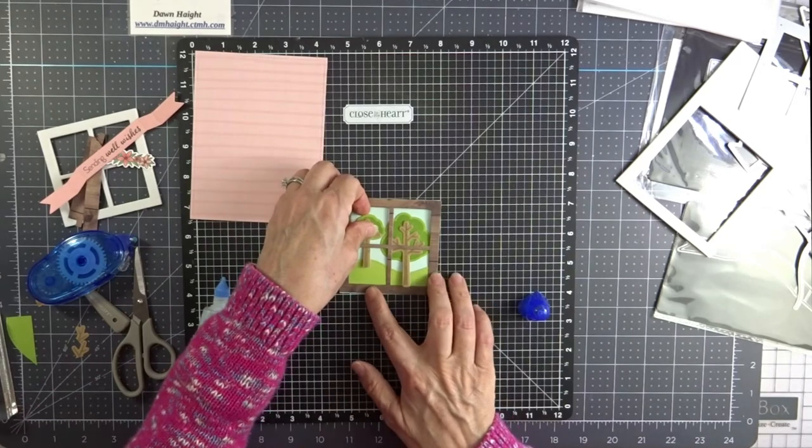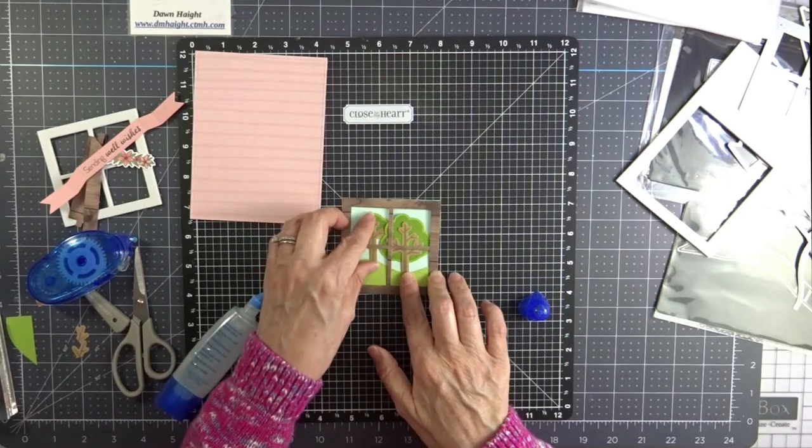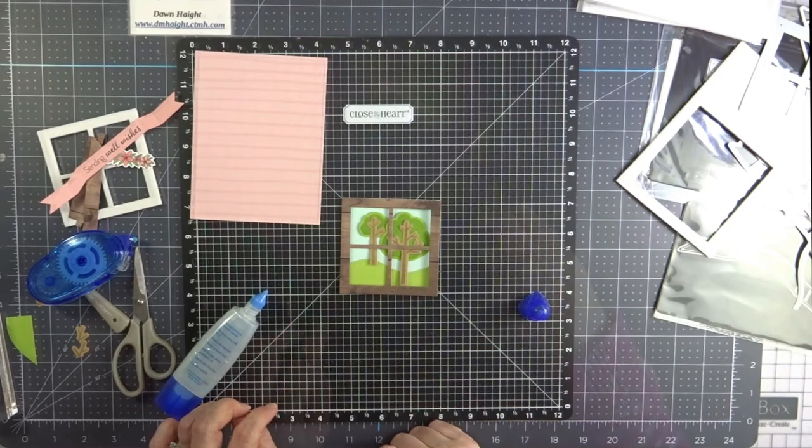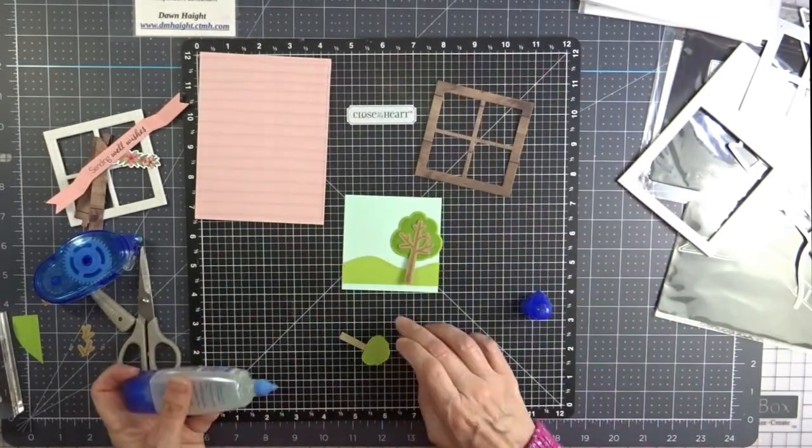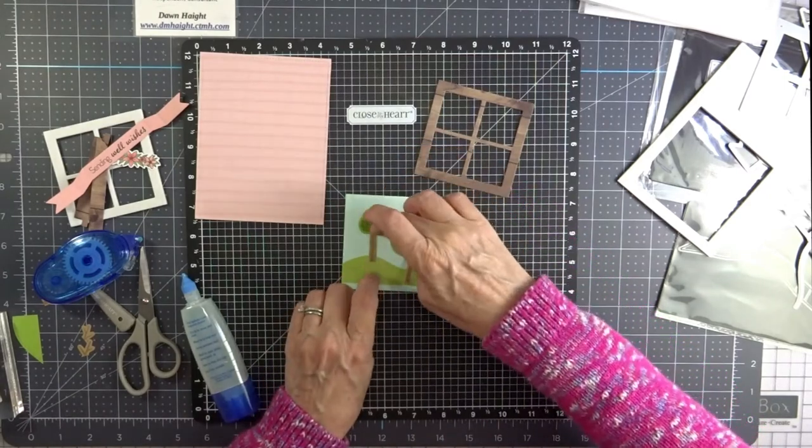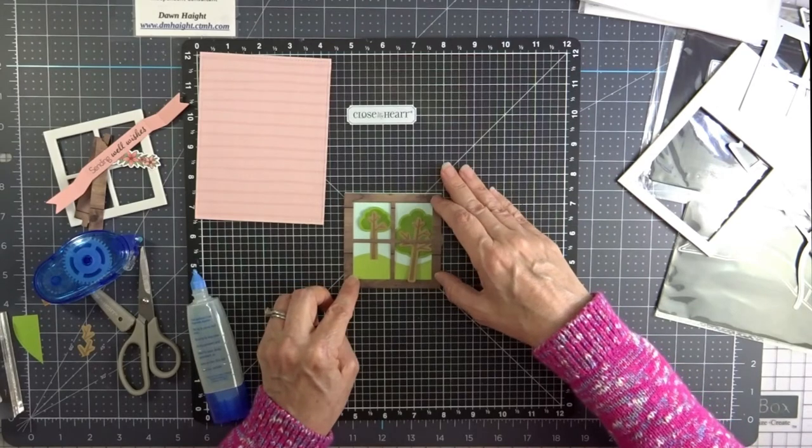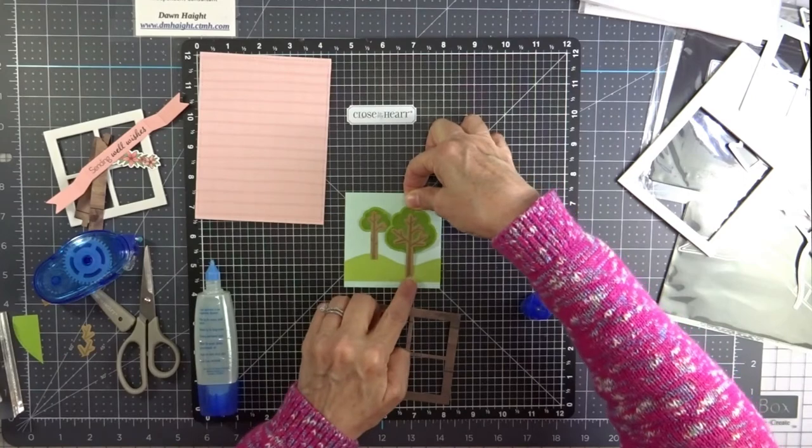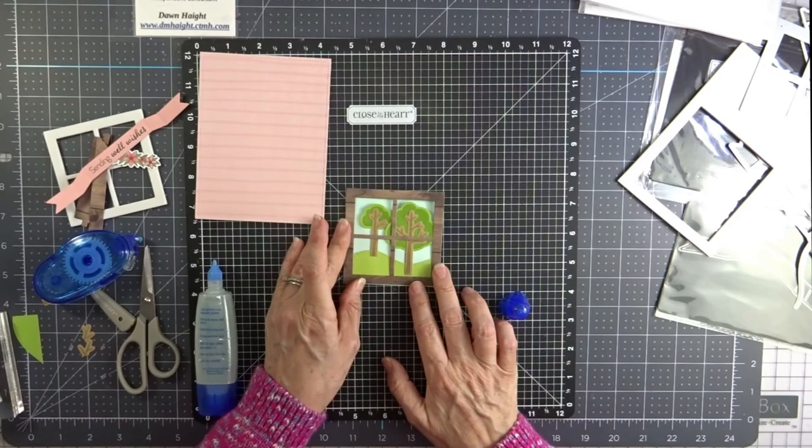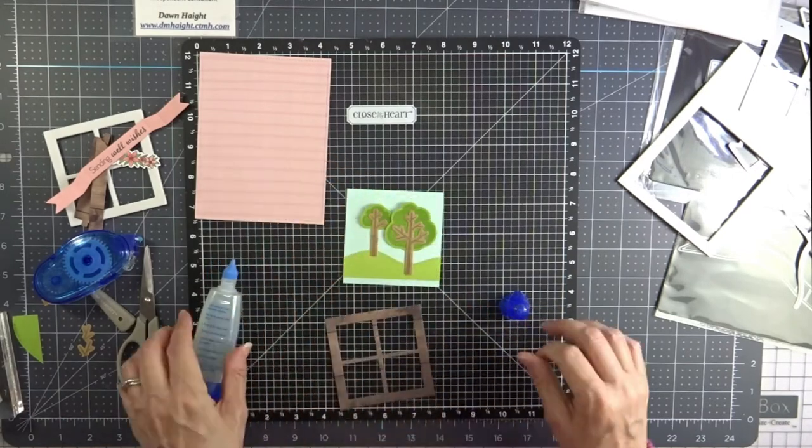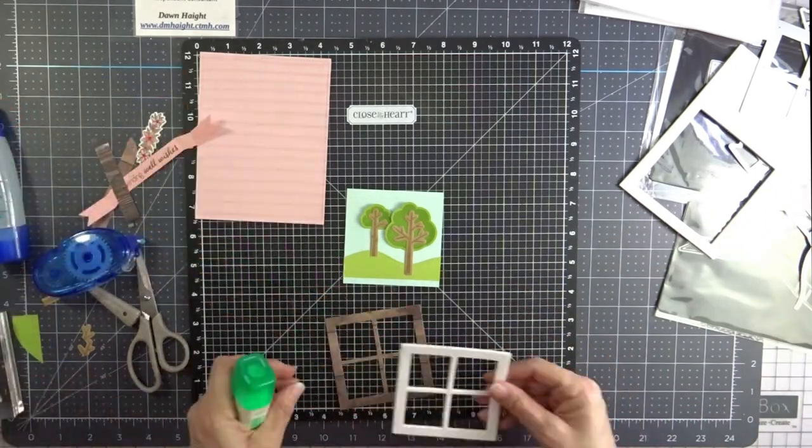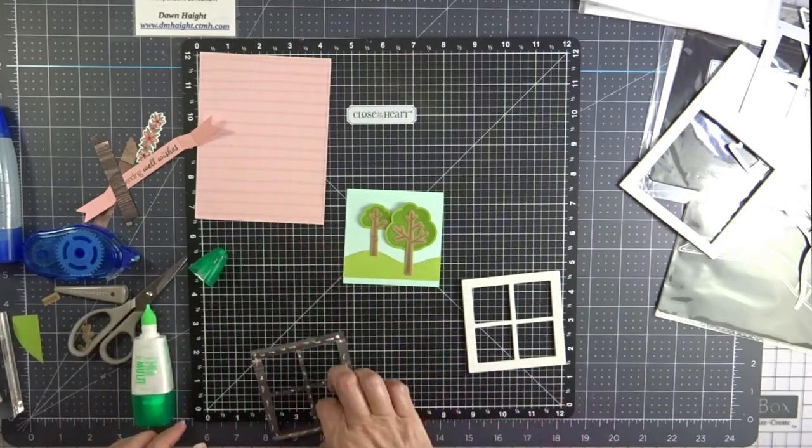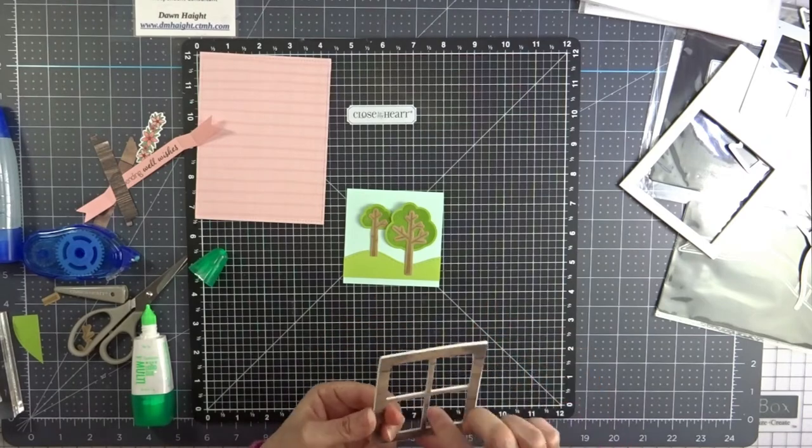All right, we're getting there. So I'm going to have that kind of slide it behind the larger tree in the foreground. So I'm going to glue those down. I'm going to glue my foam piece to my window frame and I'm going to use the white Tombow. This is a stickier, thicker glue and it tends to work really well with the craft foam. So that's why I've switched out to that other kind.